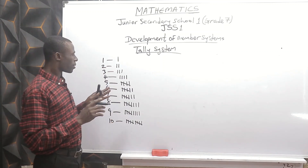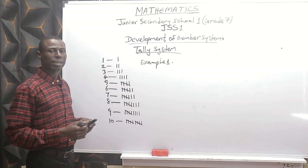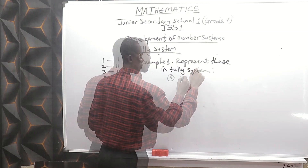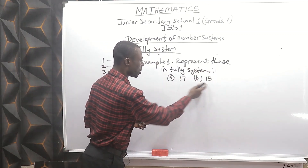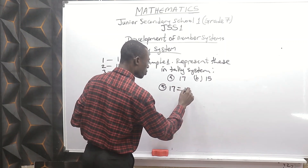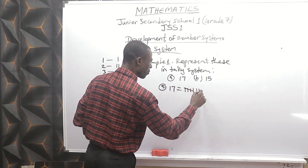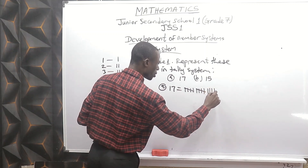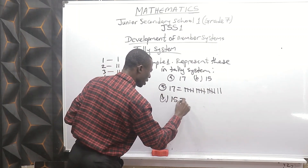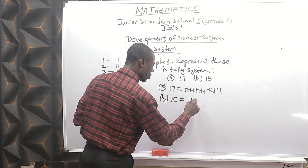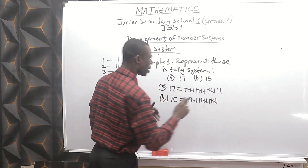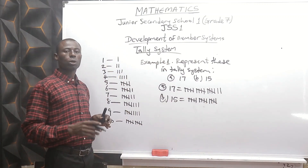Example one under tally system: represent these numbers in tally system — 17 and 15. For 17, count out 17 tally marks in groups of five: three groups and two remaining. For question B, 15 in tally system is three complete groups of five. That is three sets of the crossed-four tally mark.